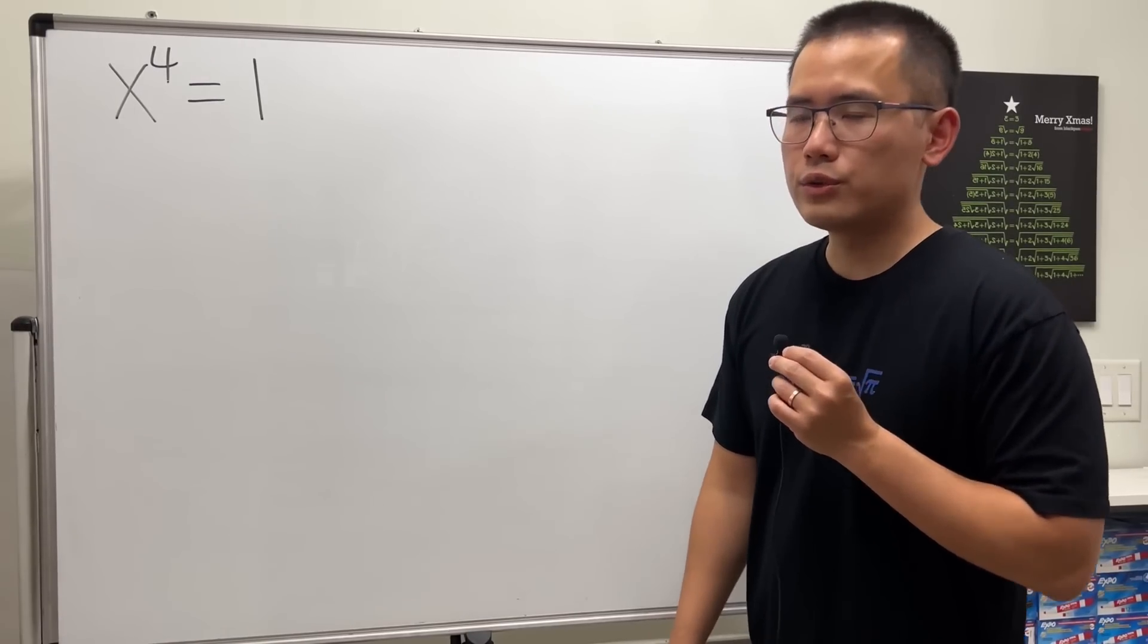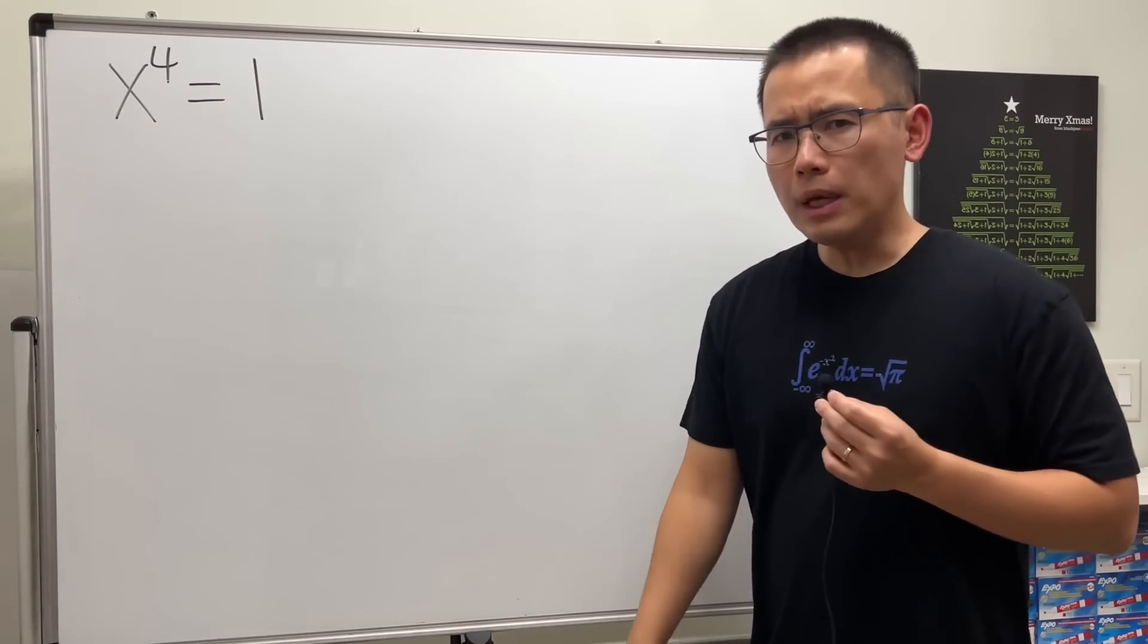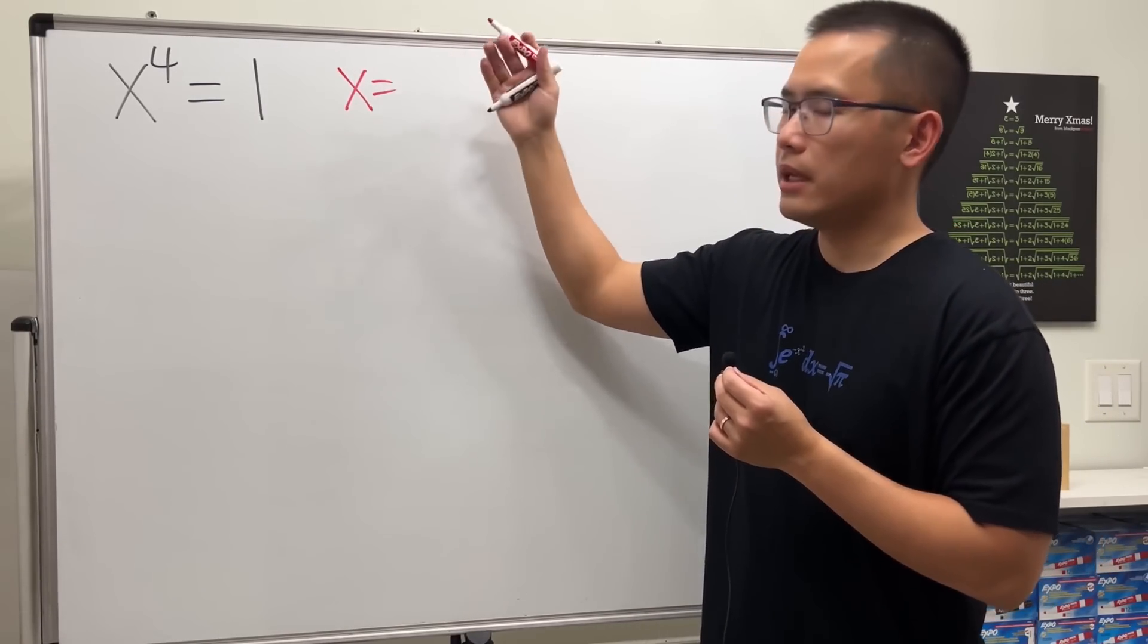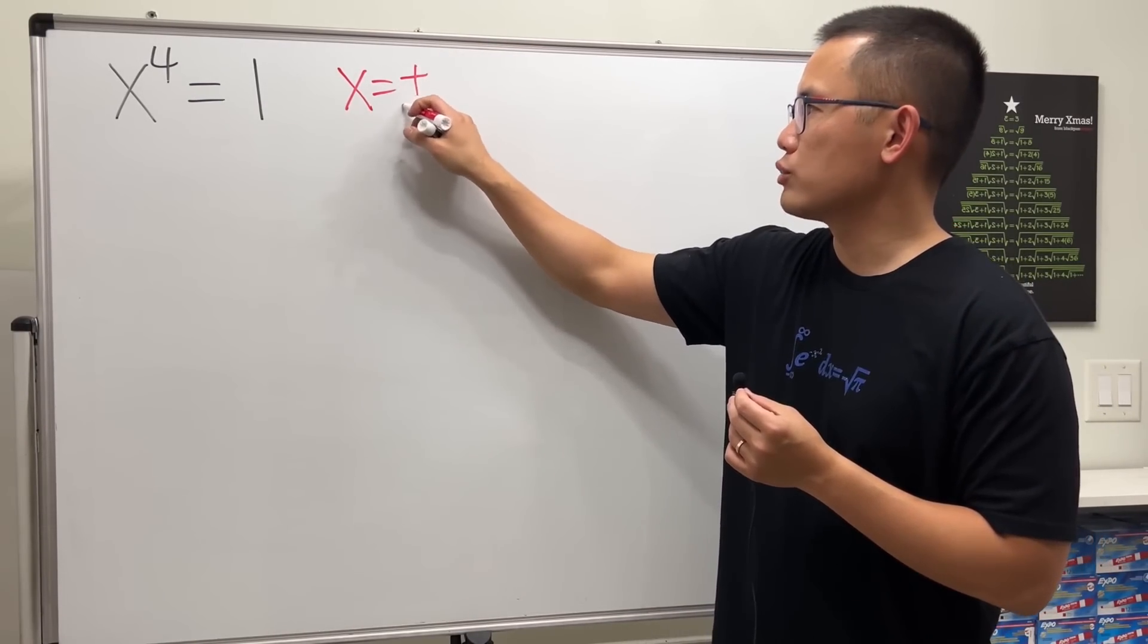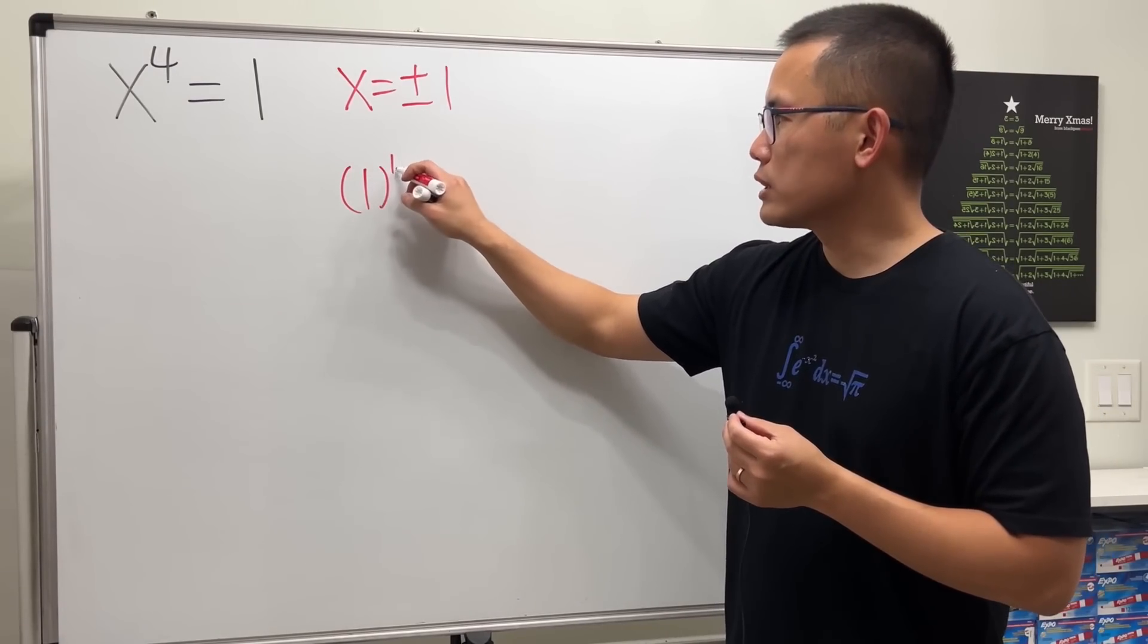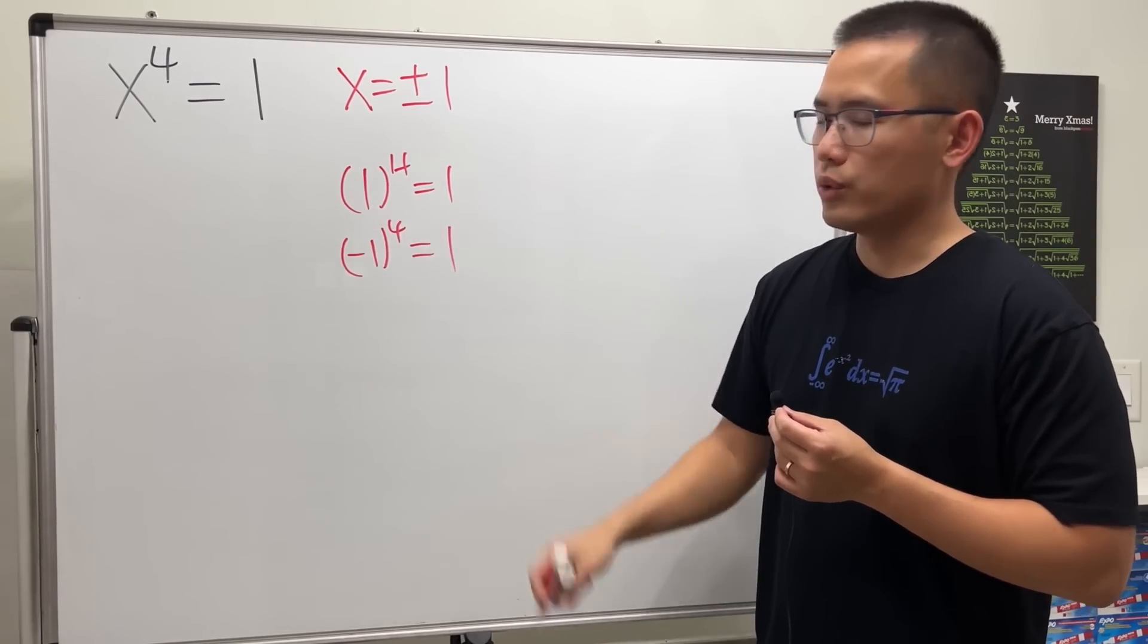Today, let's see how we can find all the solutions to the equation x to the fourth power equals 1. And you might be wondering, isn't the answer just x equals 1 and negative 1, so we can put plus or minus 1? Because 1 to the fourth power equals 1, and negative 1 to the fourth power also equals 1.